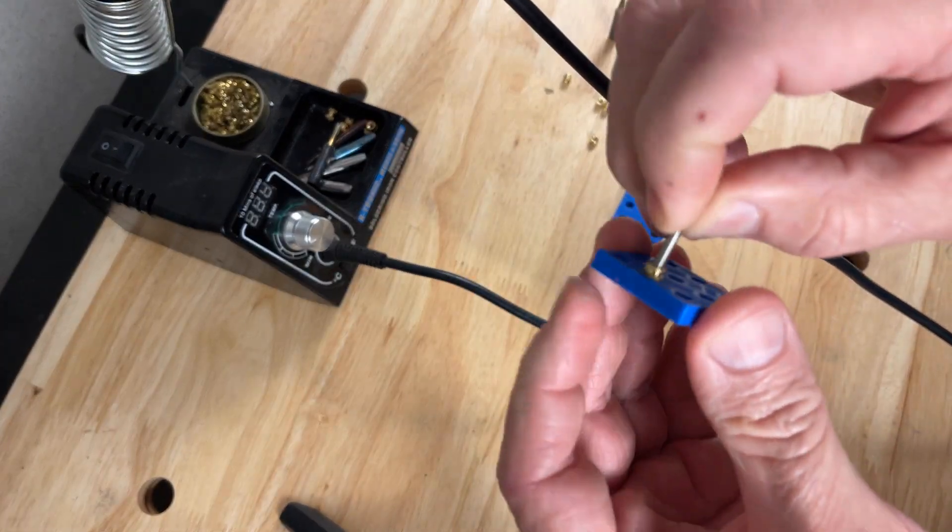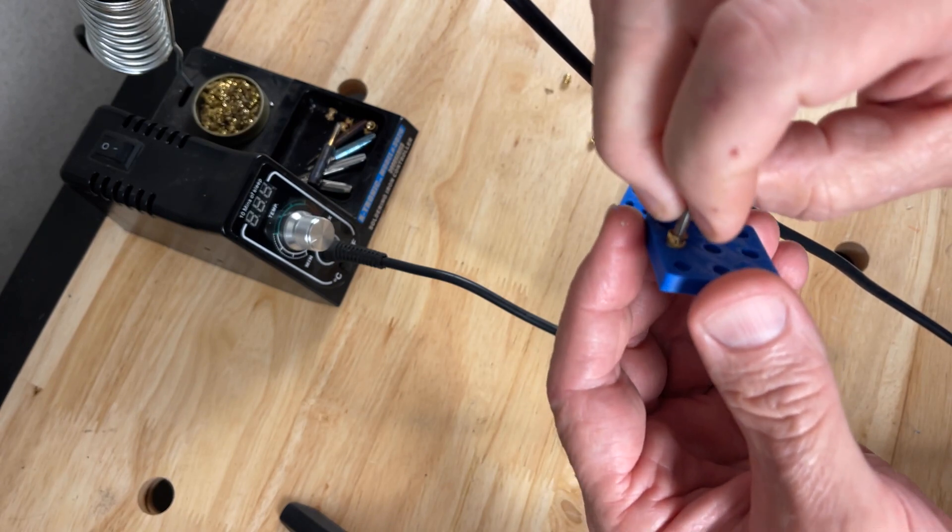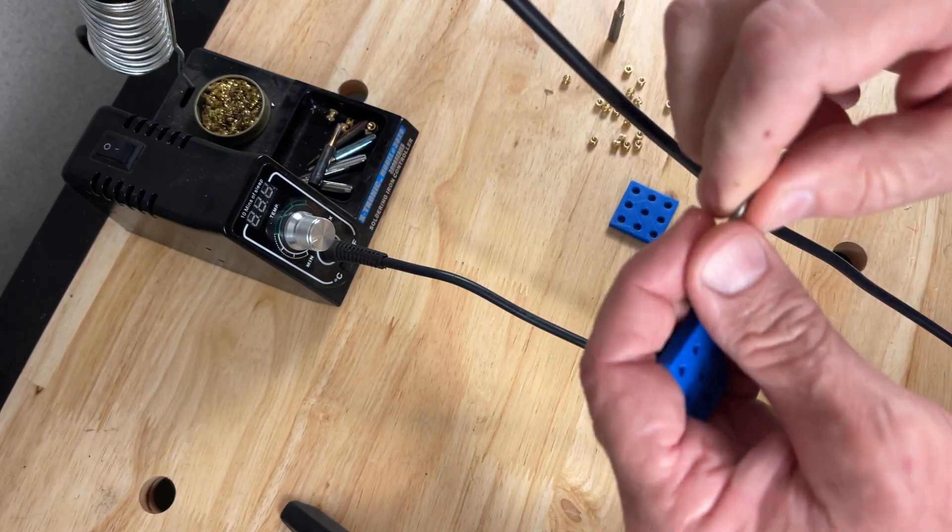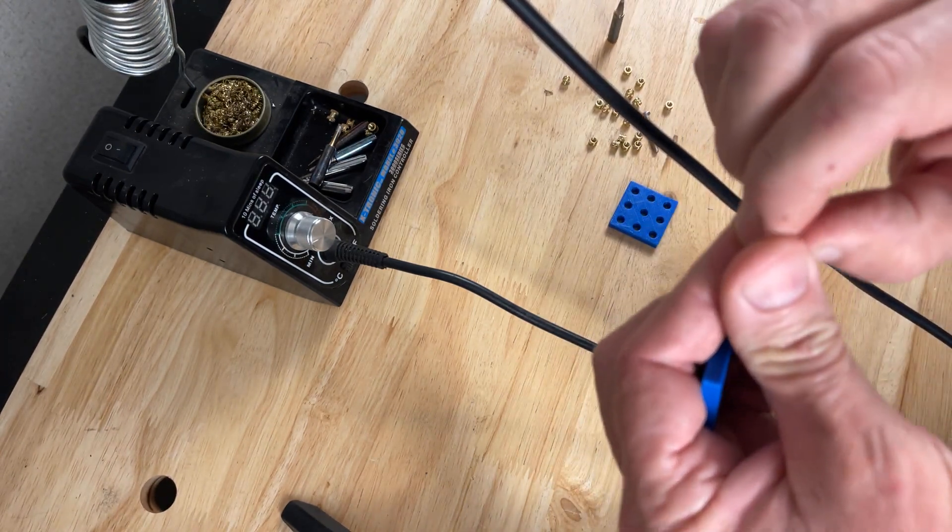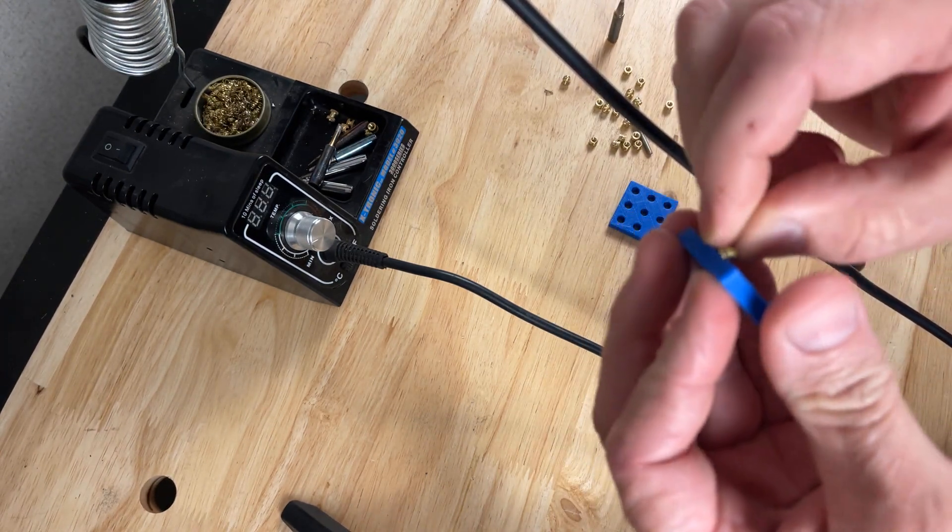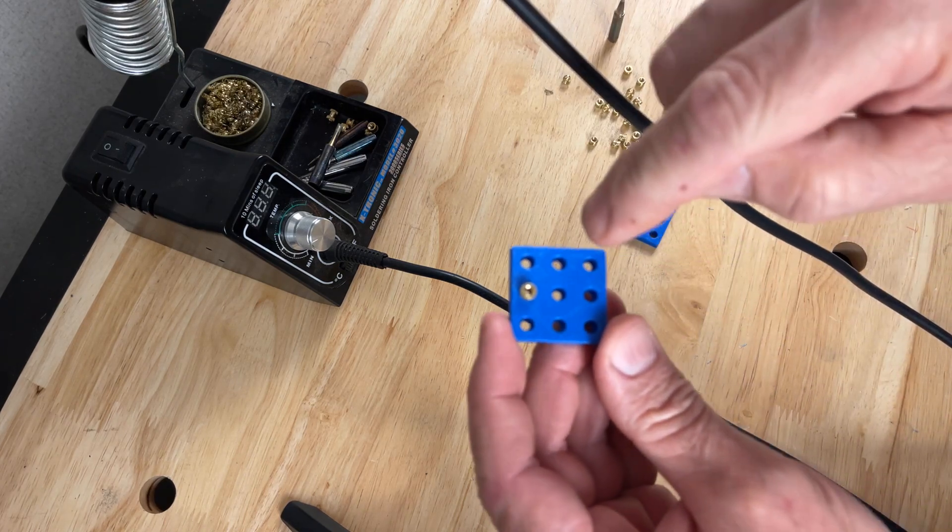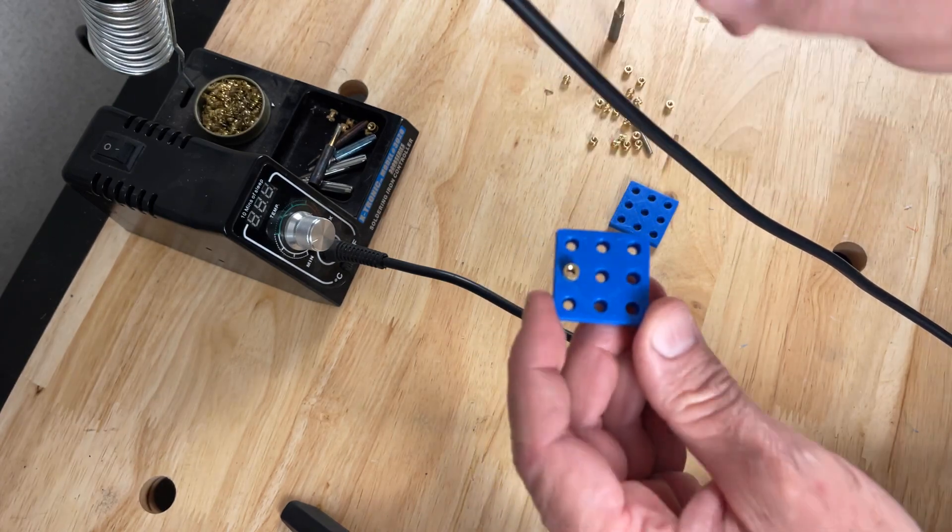The idea behind that is when you print out your parts, that is designed to perfectly fit in there, basically to get the threaded insert started. You press that smaller part in there and it will sit there, and then you can take your soldering iron and press it down in.